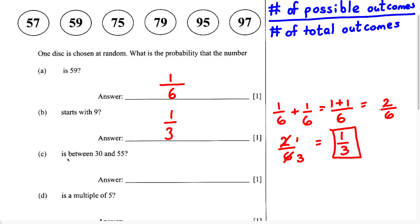For part C, it says the number is between 30 and 55. Is 57 between 30 and 55? No. 59? No, that's greater. 75? No. 79? No. 95? No. 97? No. Therefore, there is no way we can choose a number between 30 and 55. So the number of possible outcomes is 0 over 6.